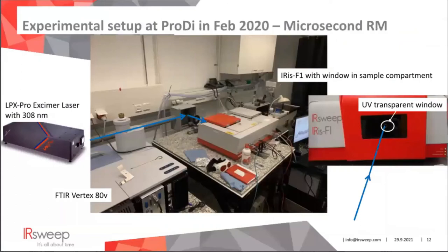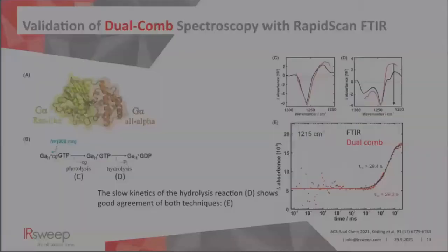Here you can see the experimental setup used for protein dynamics in more detail. Irradiation was done with an LPX Pro Excimer laser, and the spectrometers were arranged for simultaneous measurements with the Bruker FTIR Vertex ADV on the left and the dual-comb spectrometer Iris F1 from IR Sweep on the right. To easily access the sample compartment, a window with a small hole was used at the Iris F1. The laser beam enters both spectrometers from the rear side, marked with blue arrows. A lens was placed before the sample to enhance the signal, given the small beam diameter.